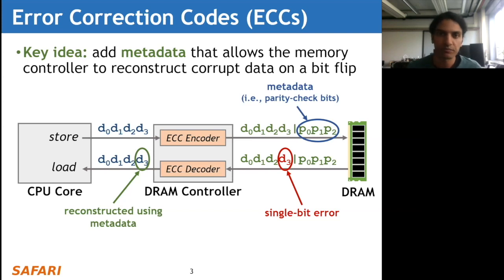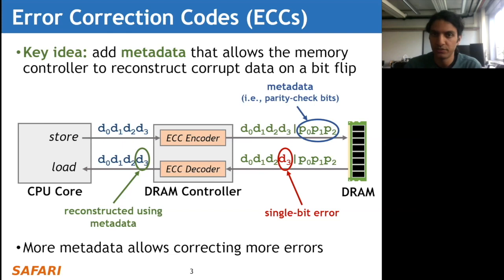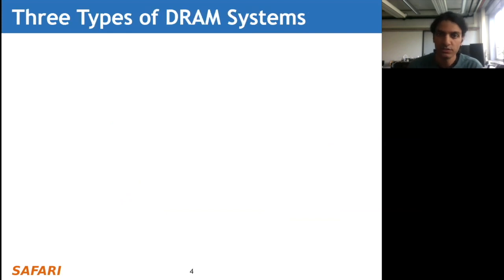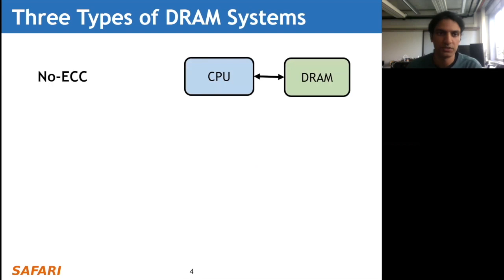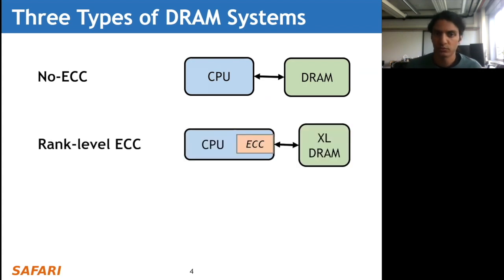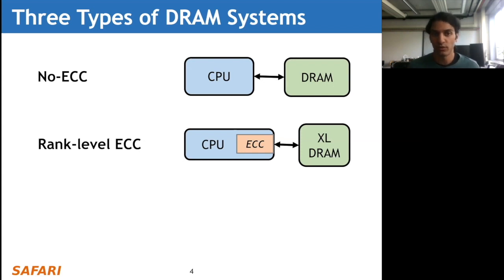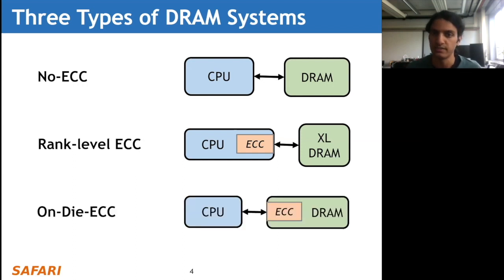We typically have three types of DRAM systems that may or may not use ECC. The first type uses no ECC - simply the CPU and DRAM talk to each other without any ECC logic. The second type uses what we call rank-level ECC, which is similar to what I just showed, where the ECC logic is contained within the CPU itself. When the CPU issues requests to the DRAM, we have an extra large DRAM that can store both the data the CPU is writing and the parity check bits the CPU generates.